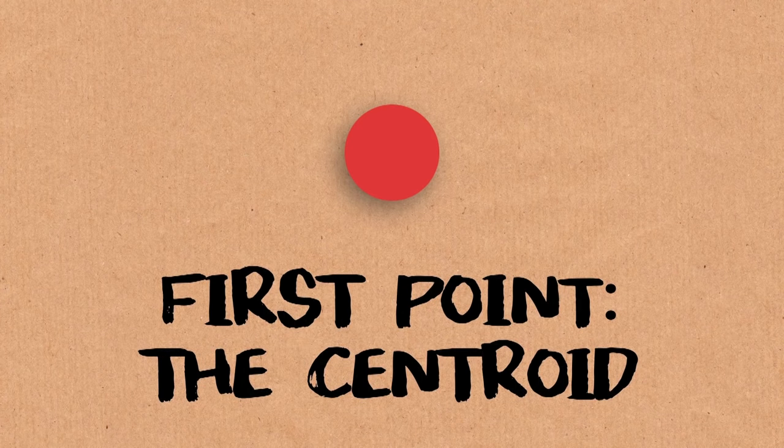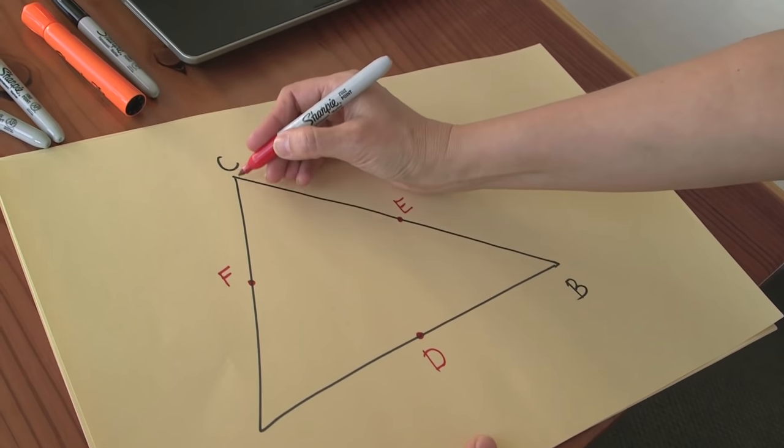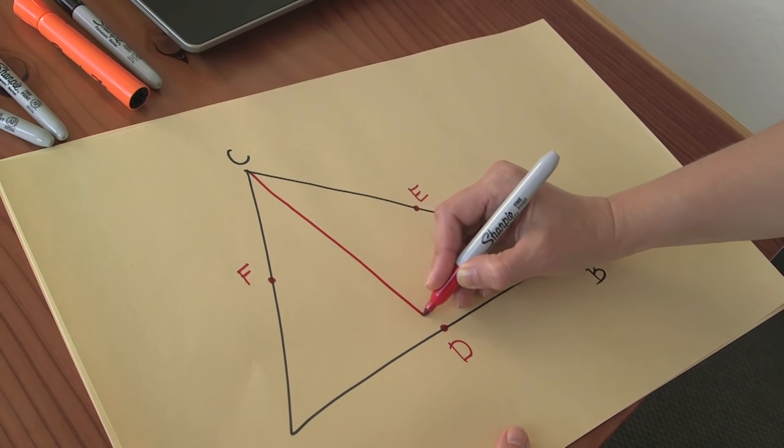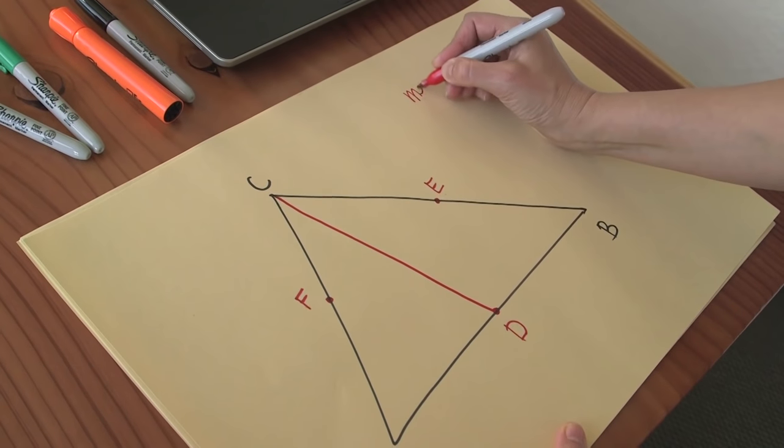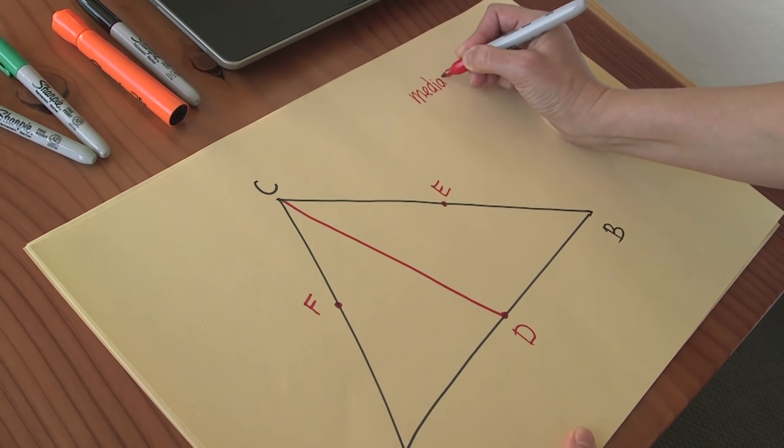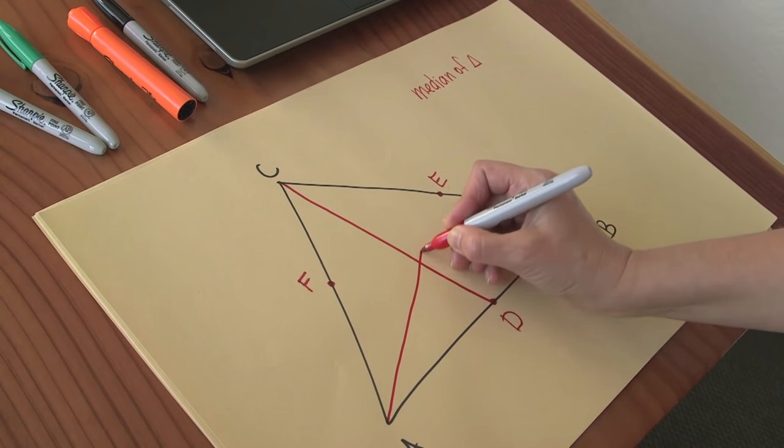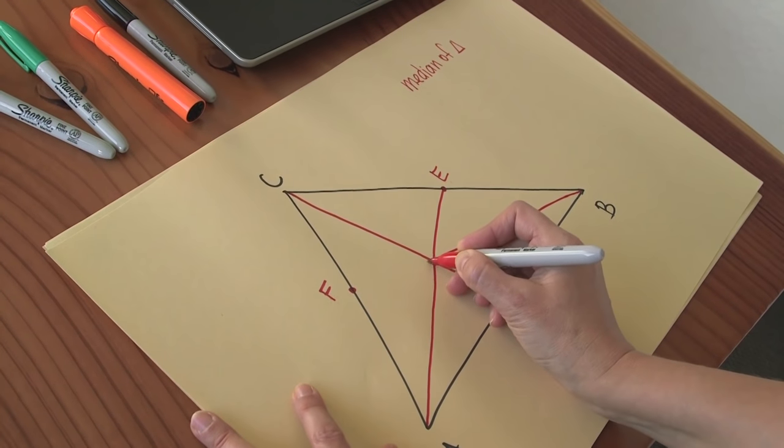So let's start with the first point. You can take the midpoints of each of the sides and connect them to the opposite vertex. This segment here, CD, has a special name. It's called median of the triangle. So how many medians we have is 3.